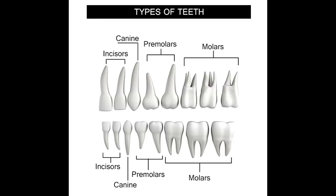There are three sets of molars located behind the second premolars. Each dental arch contains six molars, with three molars on each side of the mouth. Each of these has three roots. The third molars, which lie on the farthest end, are also called wisdom teeth. Due to the presence of four or five cusps and flat surfaces, these help in biting, chewing, and grinding food.